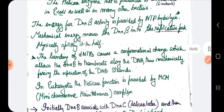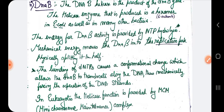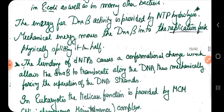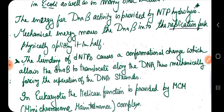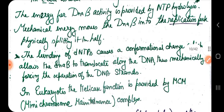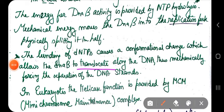Binding of the deoxynucleoside triphosphate causes a conformational change which allows DnaB to translocate — when dNTP binds, there is a conformational change in the structure of DnaB which allows it to translocate, meaning move along the DNA, thus mechanically forcing the separation of the DNA strands.